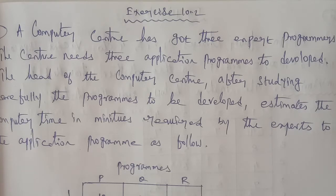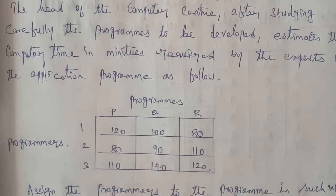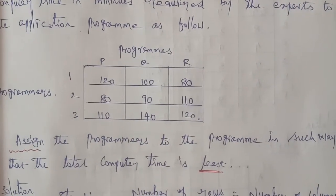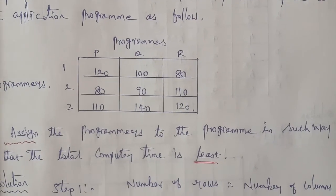The head of the computer center, after studying carefully the programs to be developed, estimates the computer times in minutes required by the experts to the applications programs as follows. The given question is: Assign the programmers to the program in such a way that the total computer time is least.